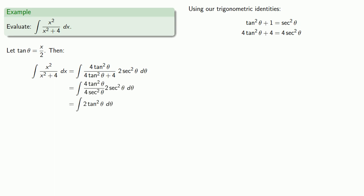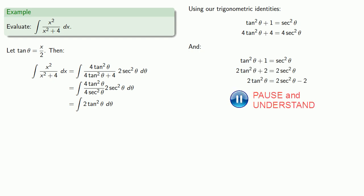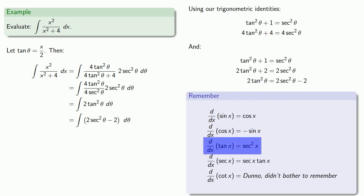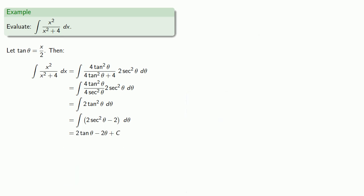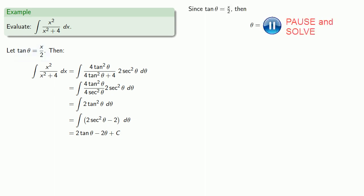If we knew the antiderivative of tangent squared, we'd be in great shape. Unfortunately, we don't. But we can use our fundamental Pythagorean identity for secant and tangent to rewrite tangent squared, and that gives us a new integral. What makes this useful is that secant squared is the derivative of a known function, so we can find the antiderivative. Our last step is putting everything back in terms of x. We know tangent theta equals x over 2, and that means theta itself is arctangent of x over 2. That gives us our final antiderivative.